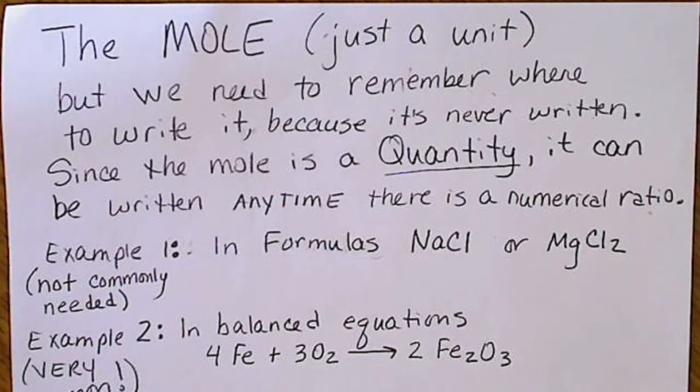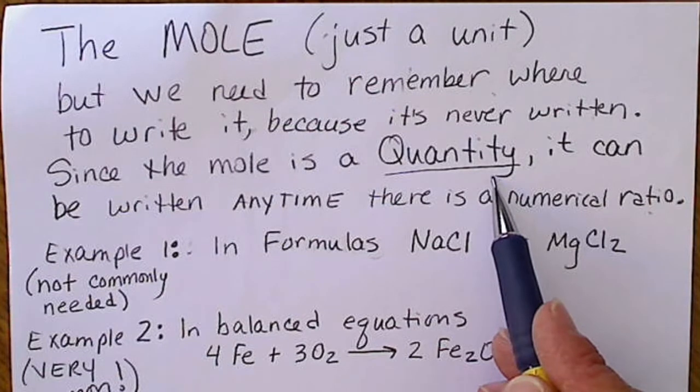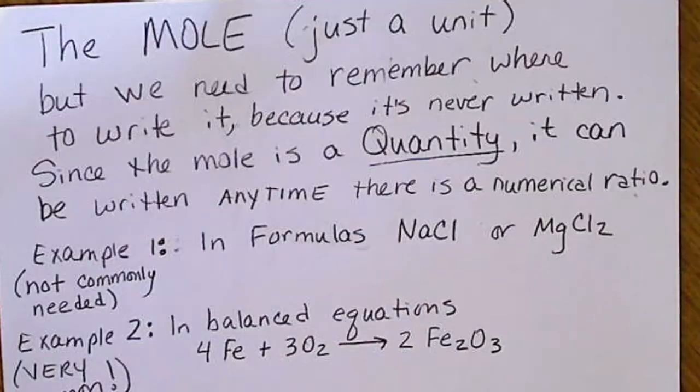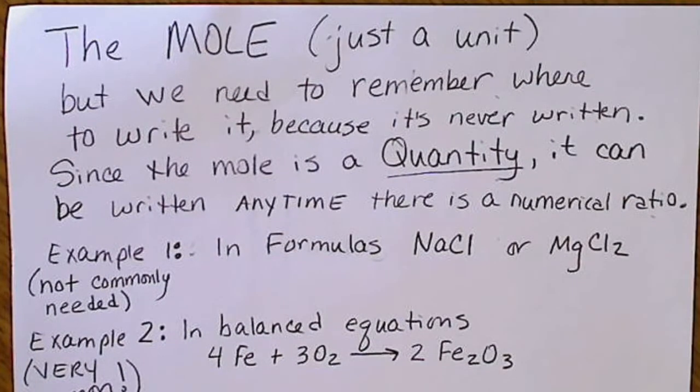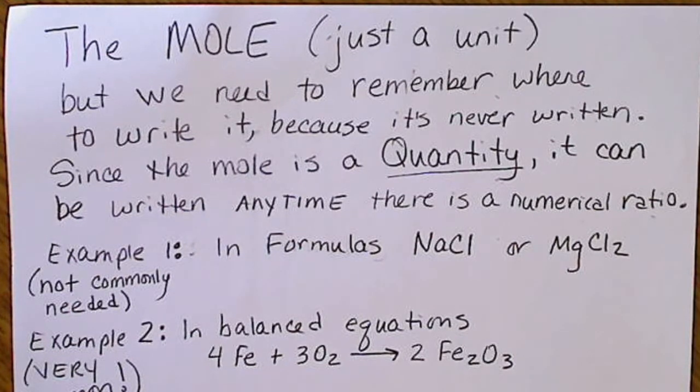But the mole is a quantity. It's that gigantic number, 6 times 10 to the 23rd. So a quantity is just an amount. Any time we have a numerical ratio in chemistry, we could write that ratio in terms of moles.